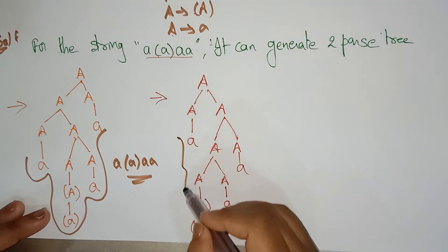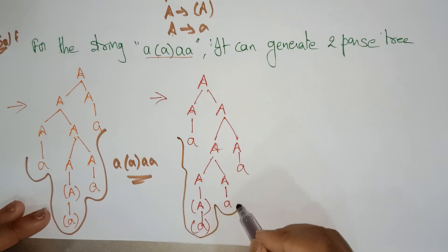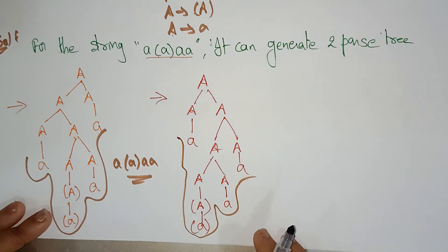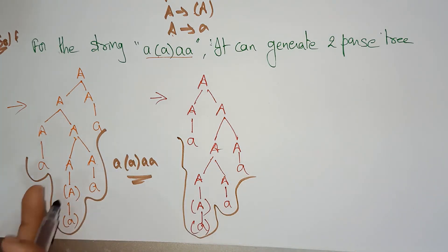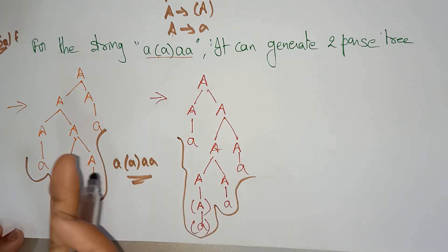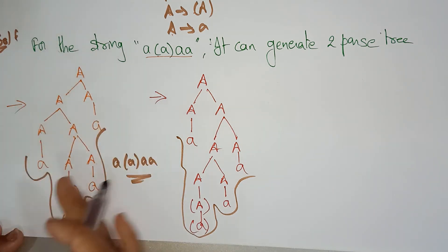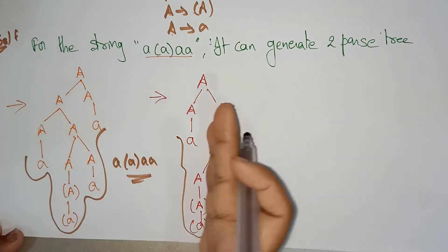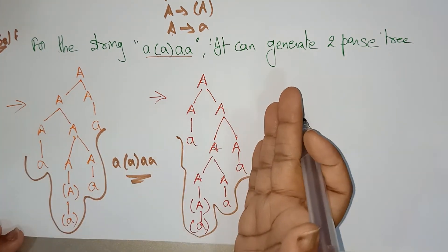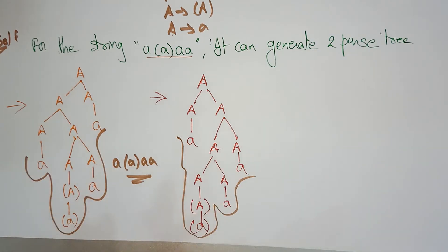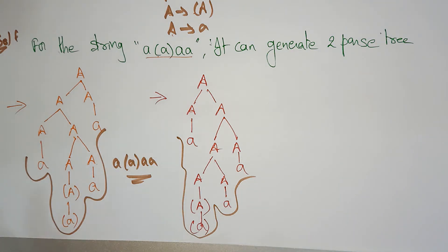I got the same string as output, but the pattern is different. Here it is represented one way, and there it is represented differently. Since I generated two parse trees, I can clearly say that the grammar is an ambiguous grammar.